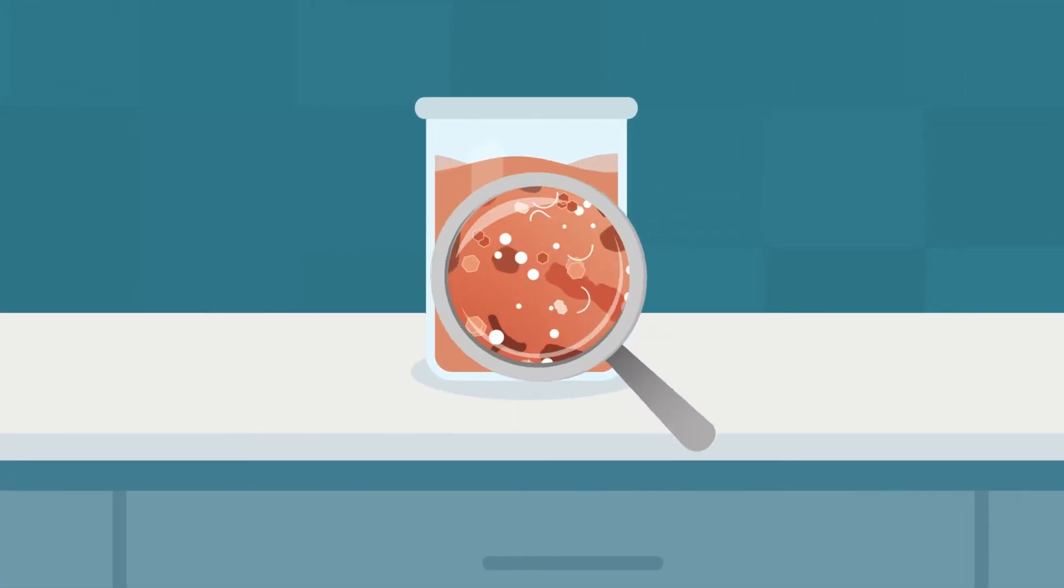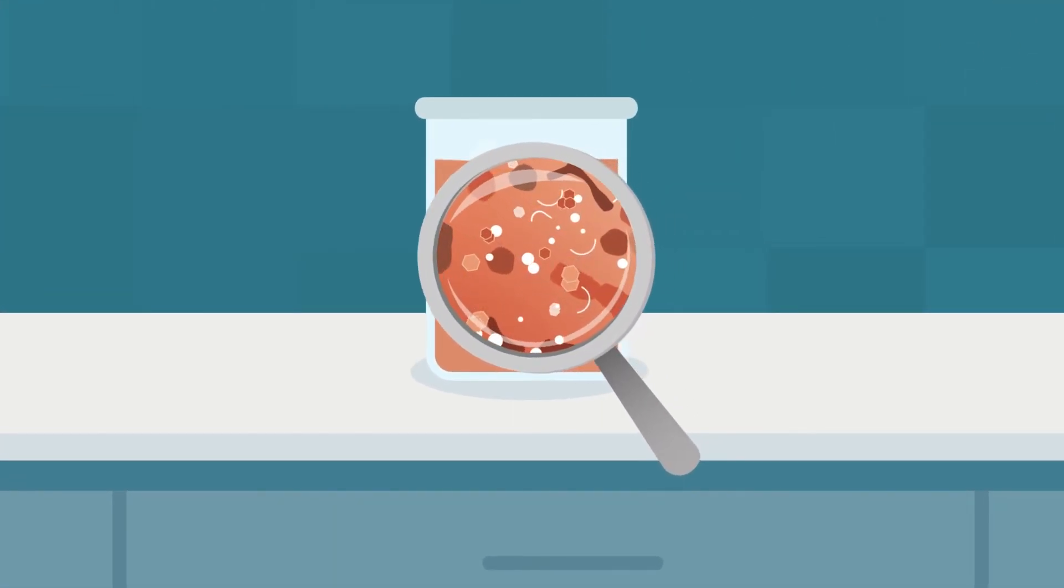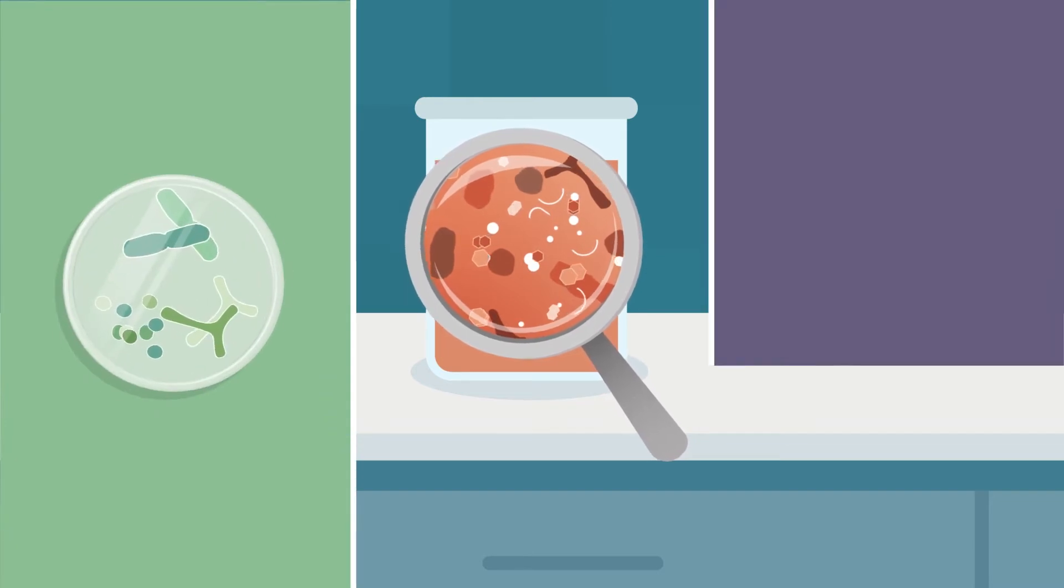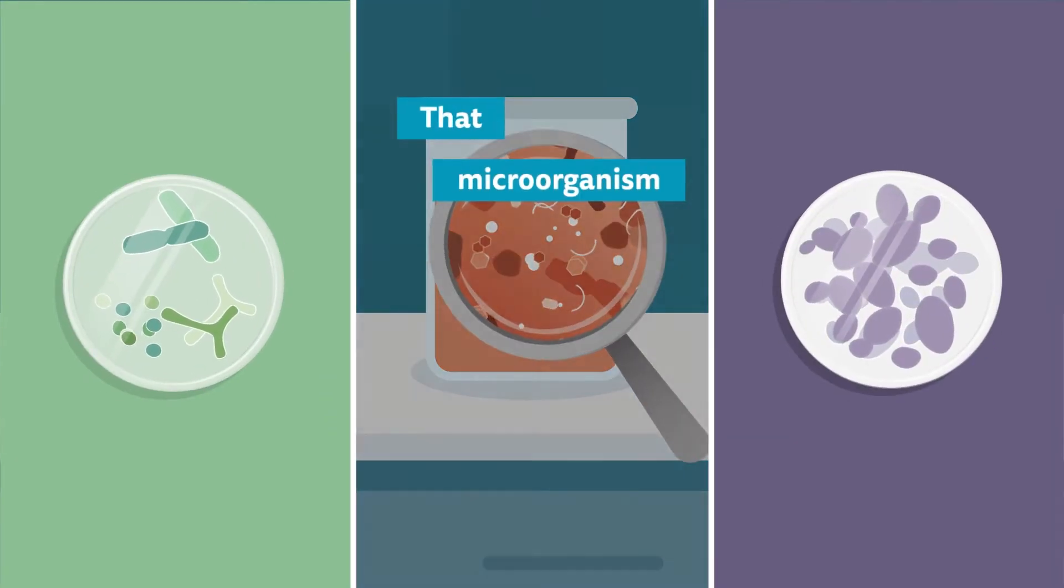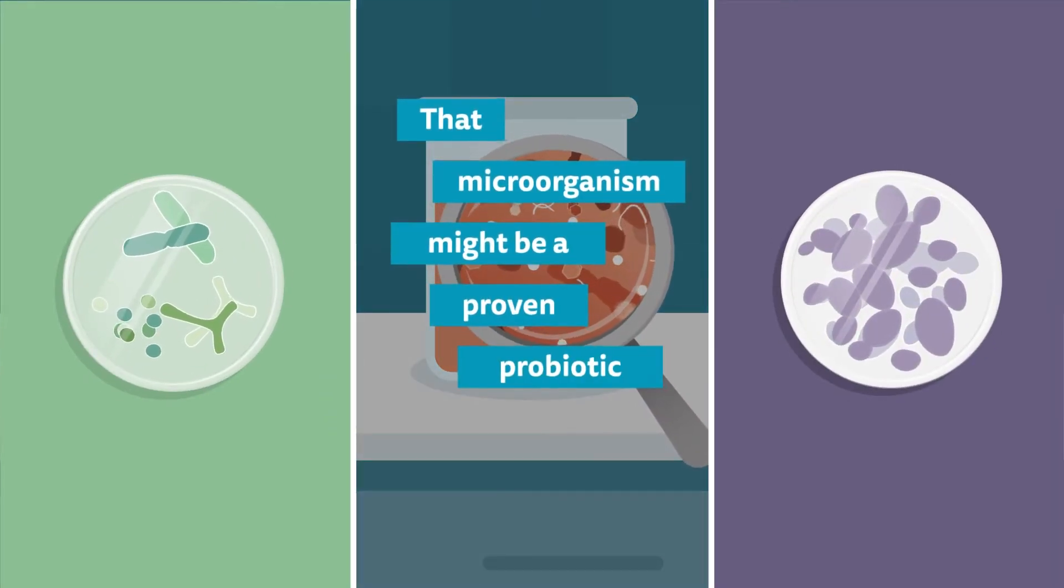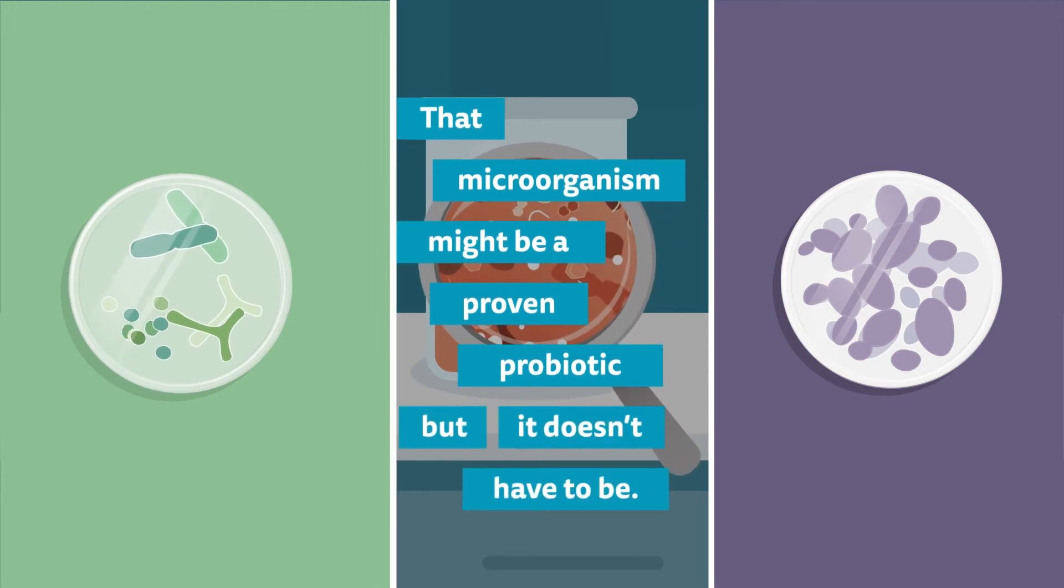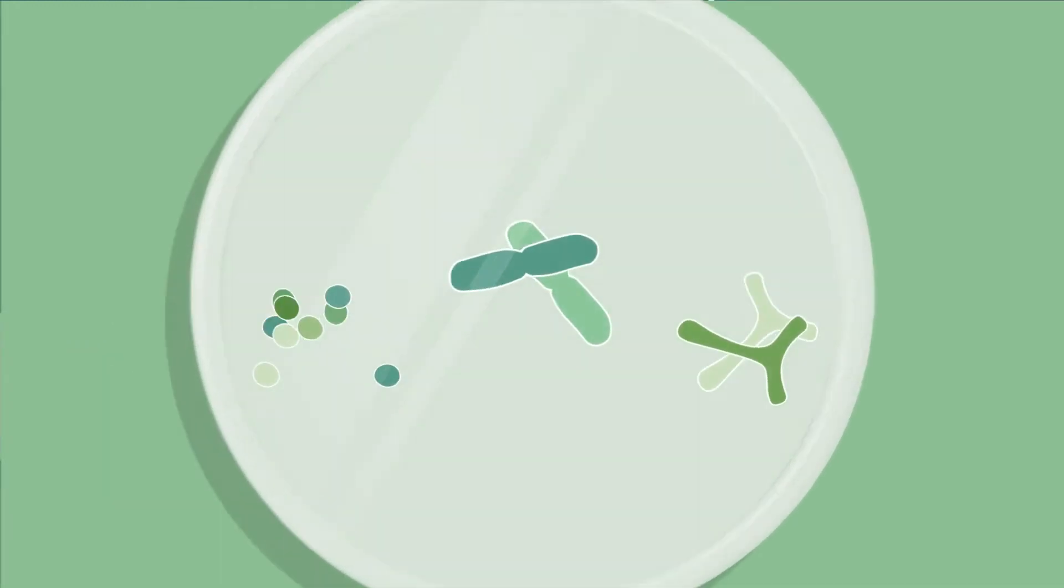To make a postbiotic, you must start with a live microorganism, such as a bacterium or yeast. That microorganism might be a proven probiotic, but it doesn't have to be. Next, inactivate that microbe.